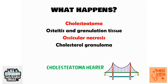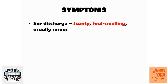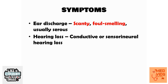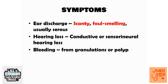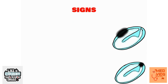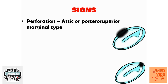Symptoms of aticoantral disease include scanty, foul-smelling, usually serous ear discharge — foul-smelling because it is associated with bony erosion. Hearing loss can be conductive or sensorineural. There can also be bleeding from granulations or polyps. Signs include attic or posterior-superior marginal perforation on otoscopy.